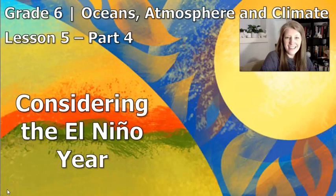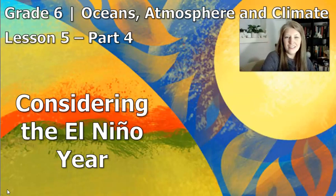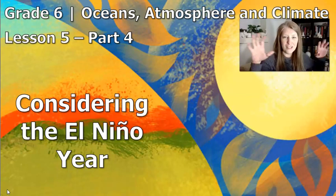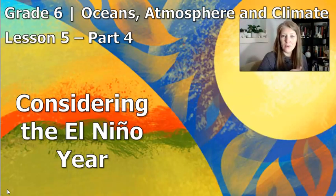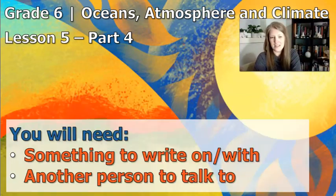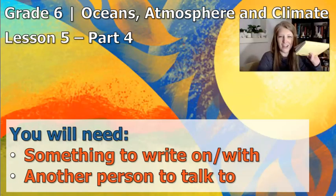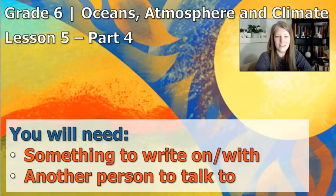Scientists, this is it. We're almost done with lesson five — this is part four. During this part of the lesson, we are going to look again at the question we're trying to answer through this whole unit, which is: why is the temperature of Christchurch, New Zealand colder during El Niño years? For this part of the lesson, you're going to need something to write with, something to write on, and someone to talk to.